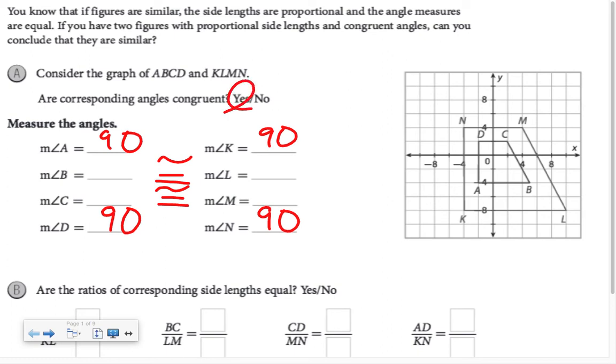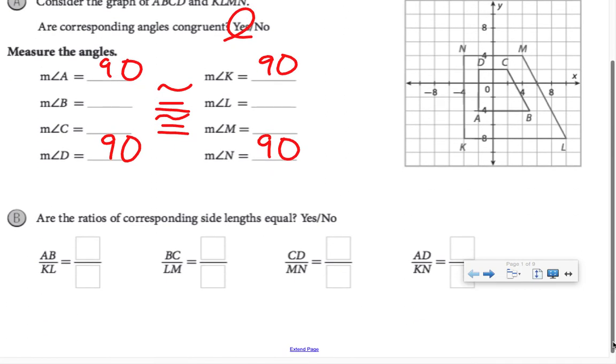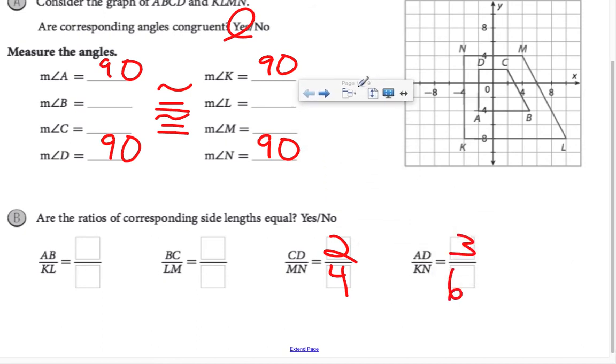Are the corresponding angles congruent? Yes. Are the corresponding ratios of sides equal? I'm not going to pull out a ruler and measure BC and LM, but the other horizontal and vertical segments are easy enough to measure by counting spaces. The length of CD is 2, the length of NM is 4, length of AD is 3, length of KN is 6. So far these ratios reduce to the same thing.